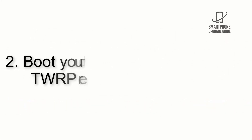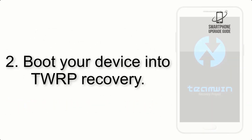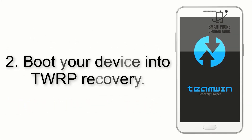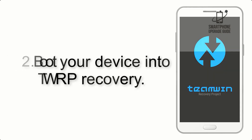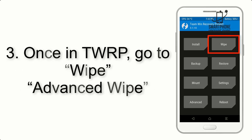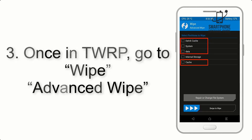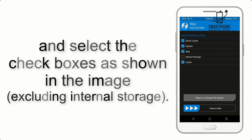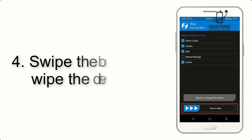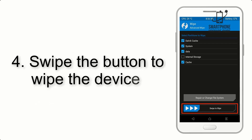Step 2: Boot your device into TWRP recovery. Once in TWRP, click on Wipe, then Advanced Wipe, and select the checkboxes as shown in the image, excluding internal storage.